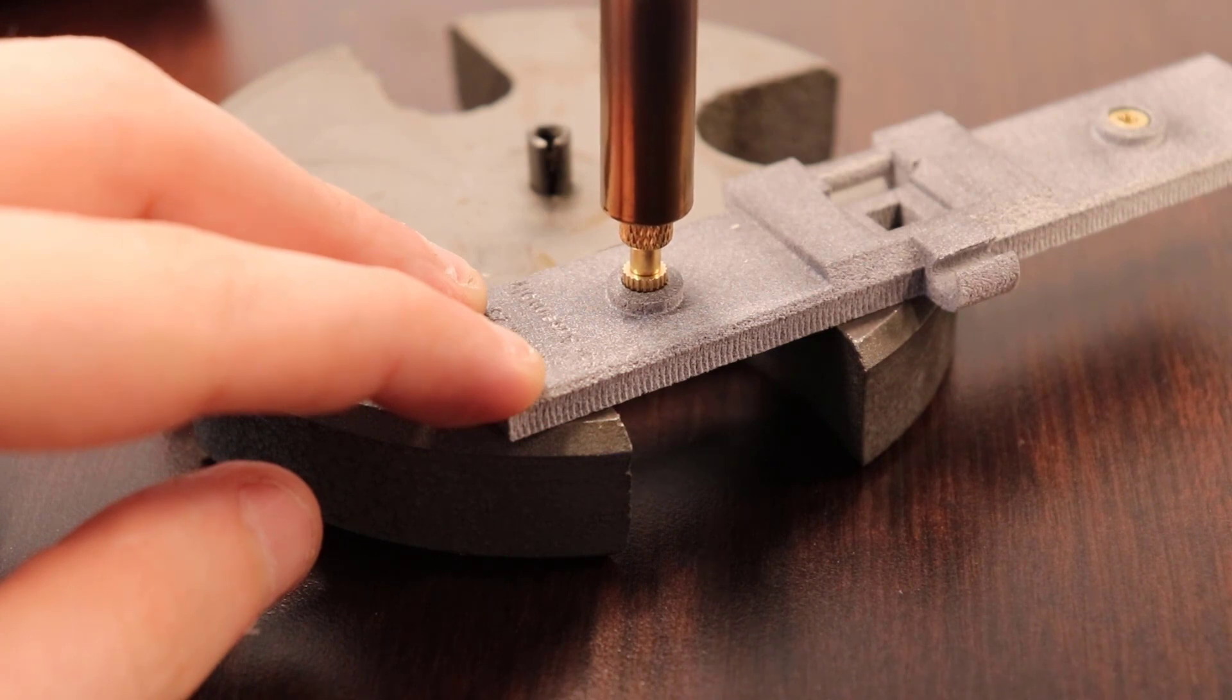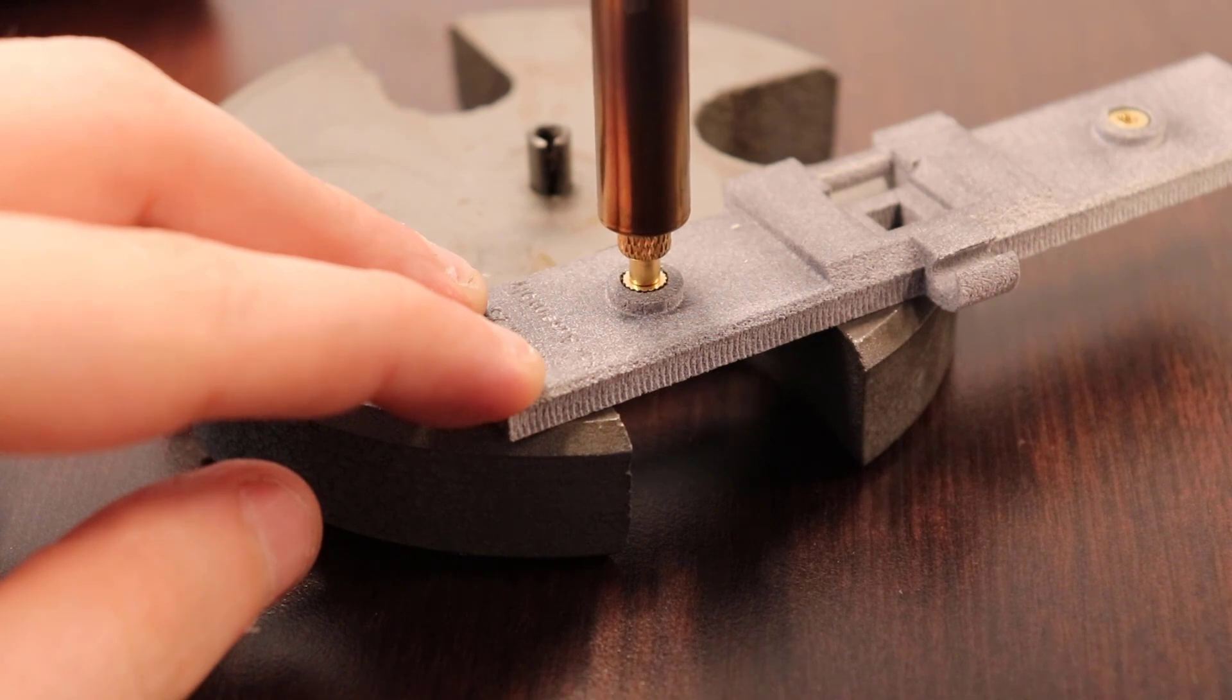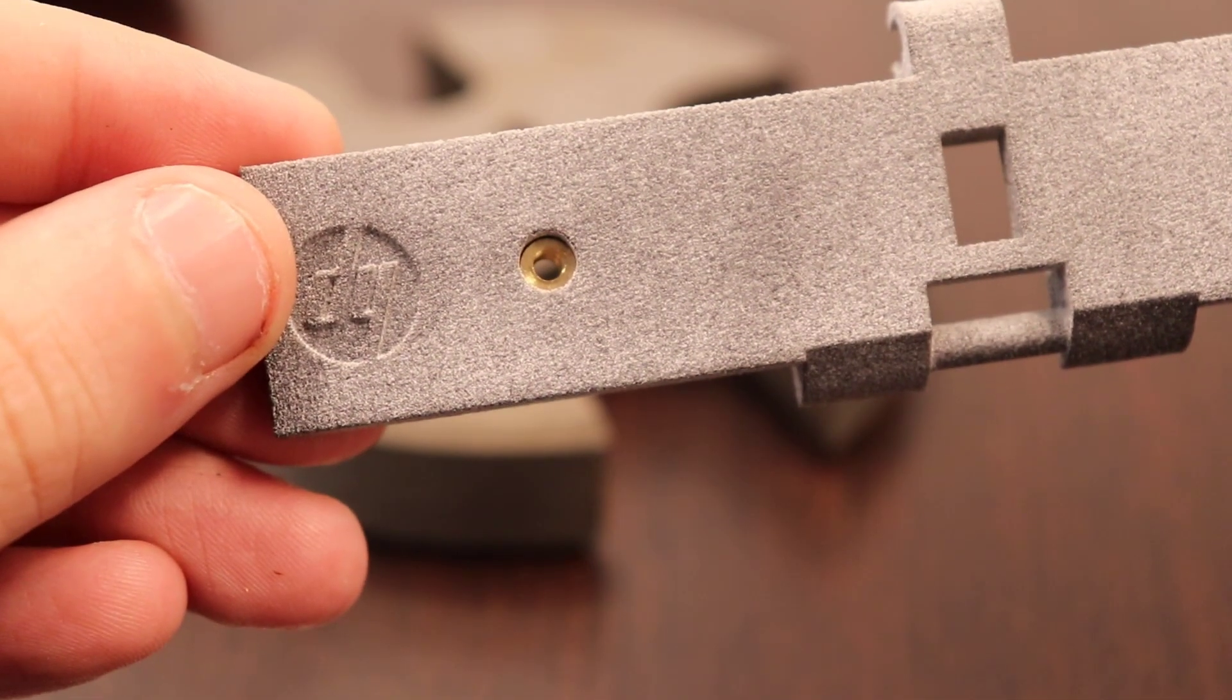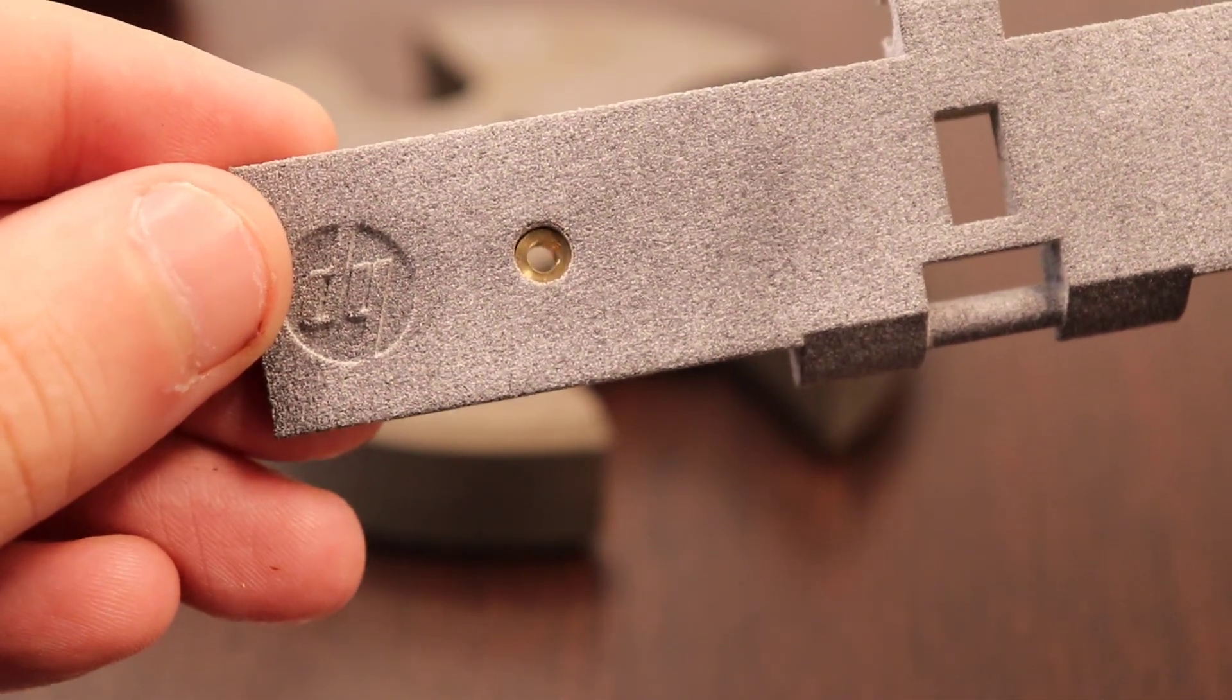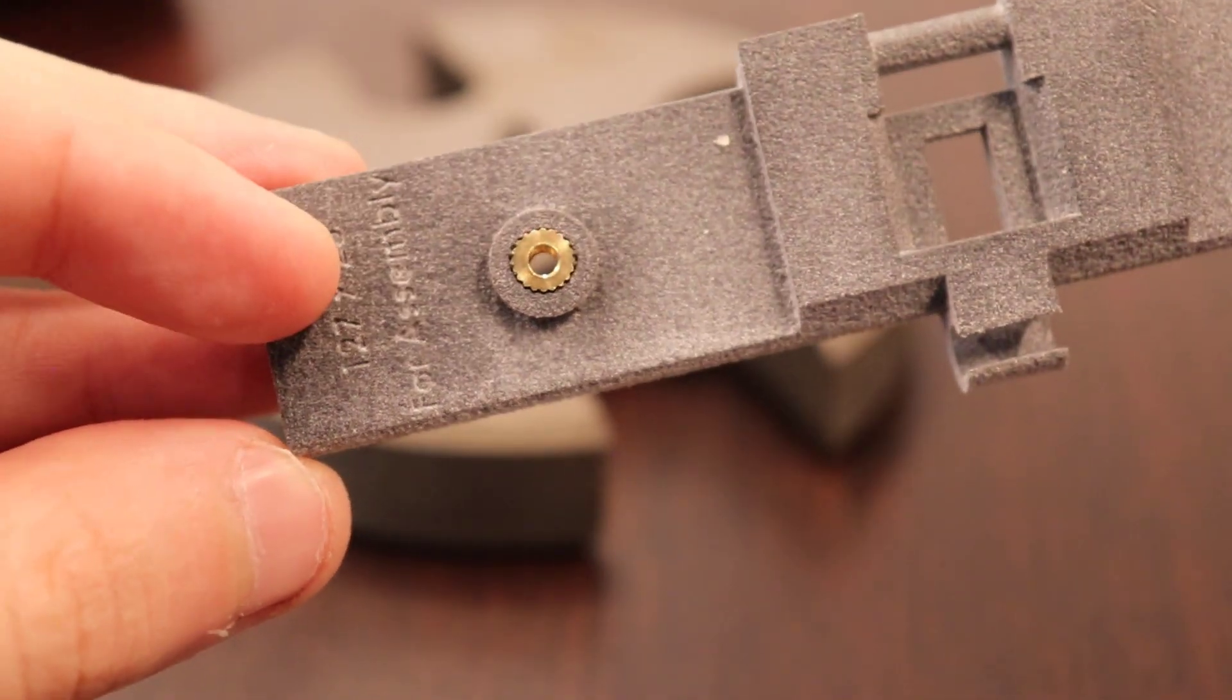Push until the end of the insert is even with the part surface and check the other side to make sure that no plastic may have melted through or over the hole. Wait for it to cool down as well. You don't want to touch the insert or around it for a moment while everything is returning to room temperature.